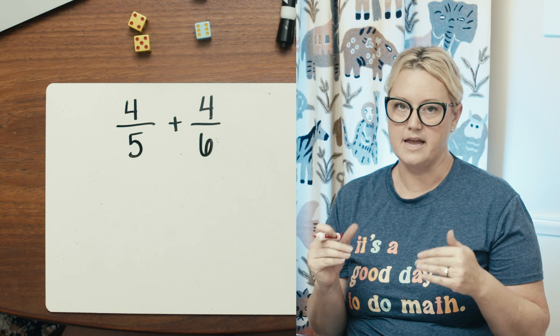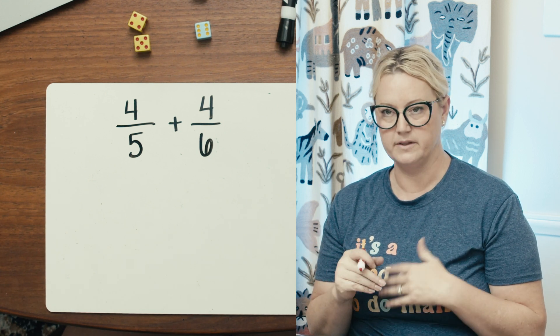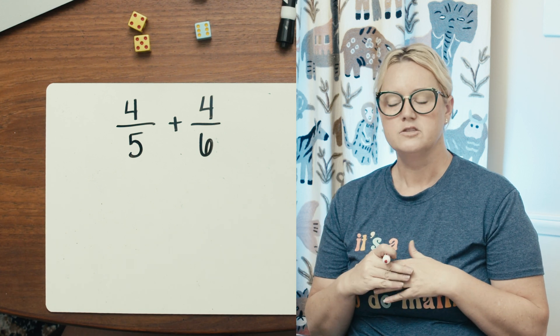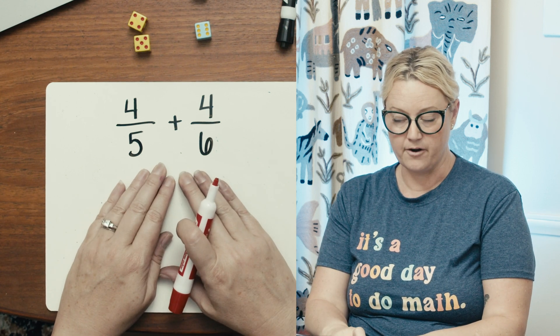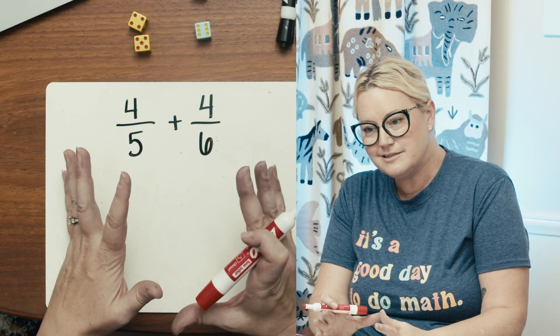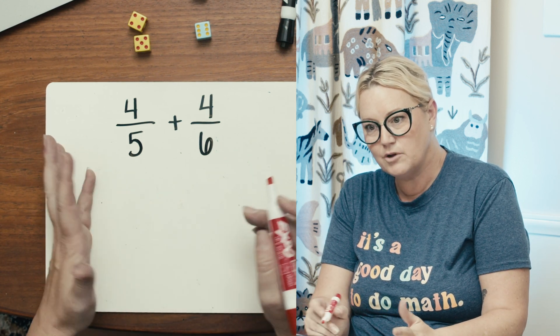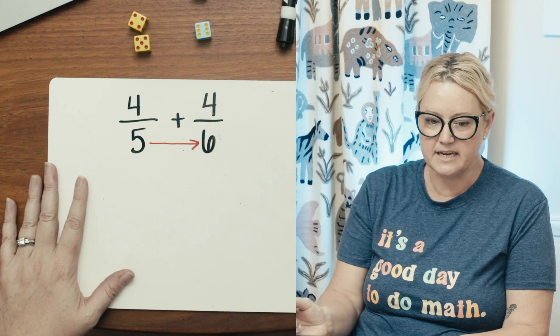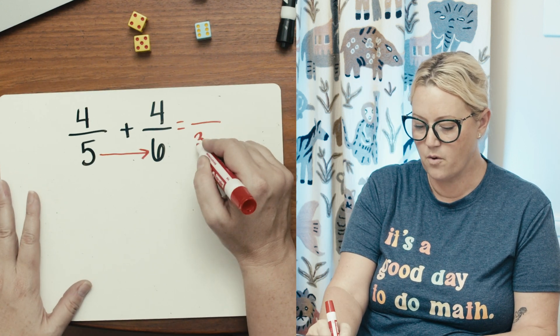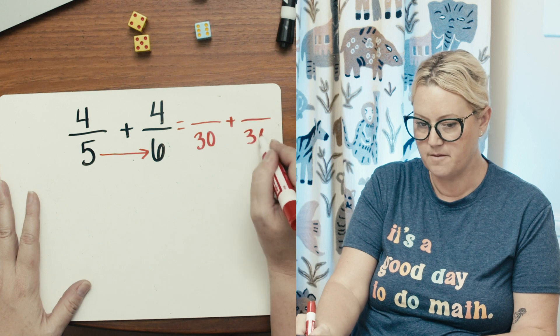Easiest way to do this. Yes, you can find the least common multiple, least, yeah, least common multiple for the common denominator. But what you could also do is you can just multiply them together. So I can multiply these together and I get five times six is 30. They're both going to be 30 on the bottom.